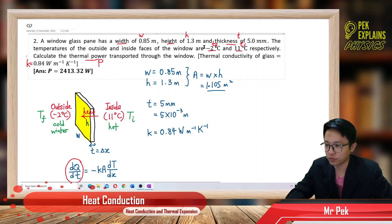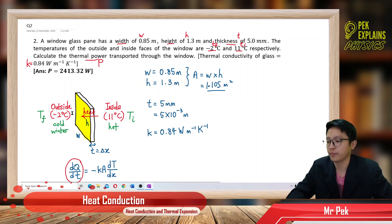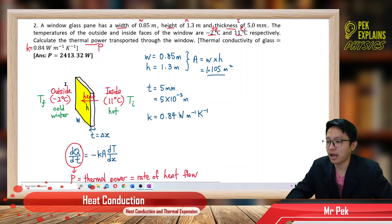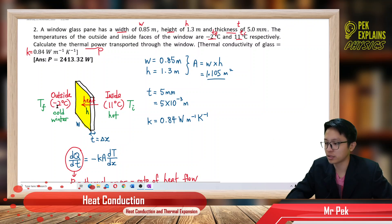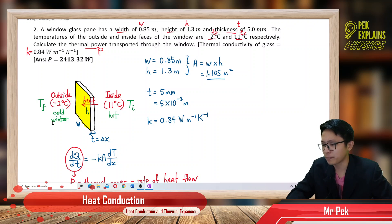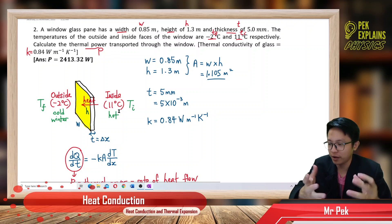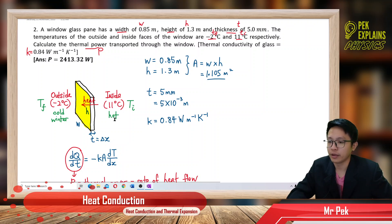The outside temperature is negative 2 and inside is 11. So outside is cold — maybe winter — and inside of the house is hotter at 11 degrees Celsius. We can see that heat always flows from hot to cold temperature.